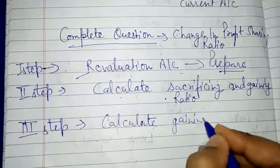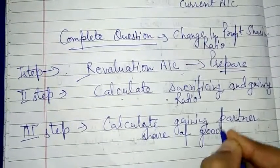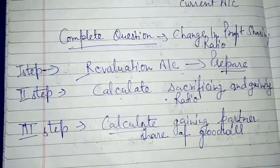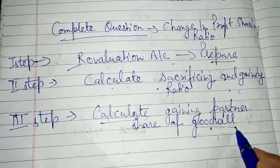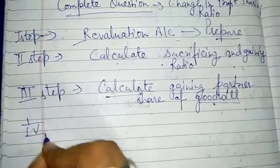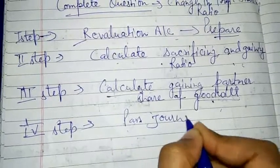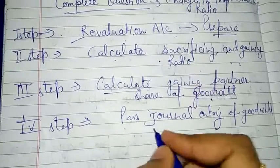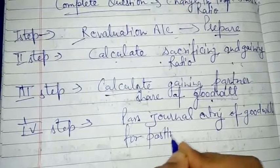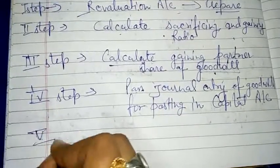Third step: calculate the gaining partner's share of goodwill. जो भी firm की total goodwill given होगी, आप gaining और sacrificing partners का share निकाल लोगे और उस gaining partner का share calculate कर लिया जाएगा। Fourth step: pass the journal entry of goodwill for posting in the capital account.